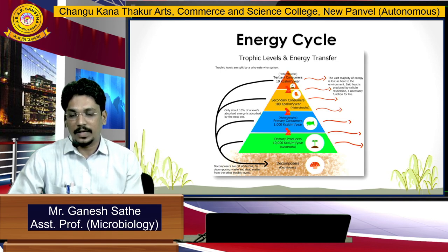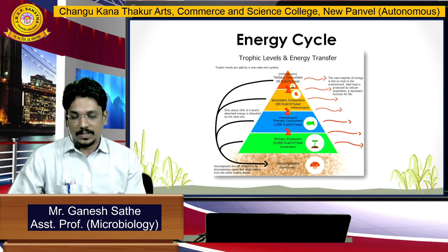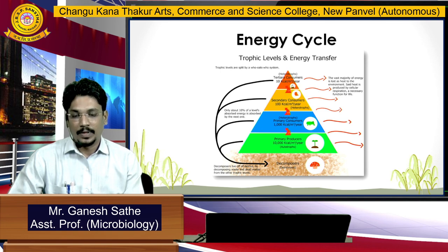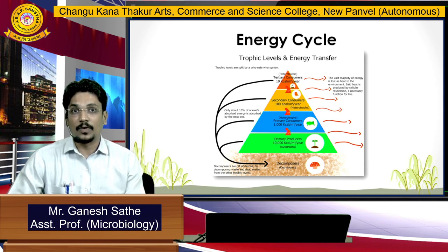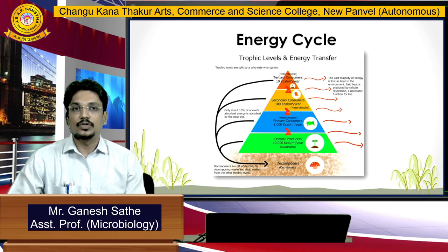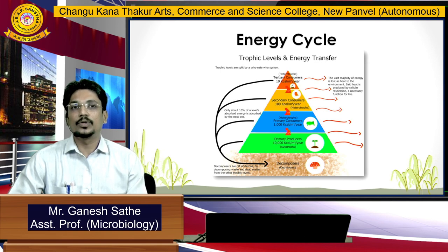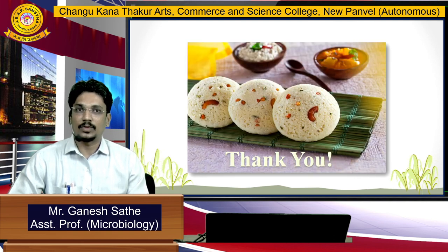Then there is the energy cycle. This triangle explains the energy cycle. There are different levels — it starts with primary producers, then heterotrophs, secondary producers, and tertiary consumers. That means energy is transferred from primary producers up to tertiary consumers. After the death of tertiary consumers, that matter will be decomposed with the help of microorganisms as well as fungal species. Thank you.